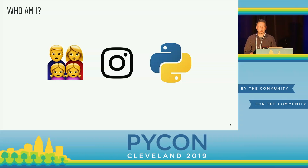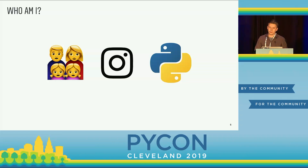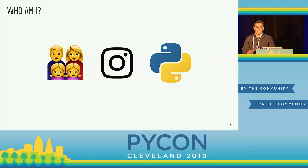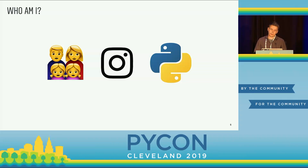I've worked mostly on Python-related projects. Initially I worked on bootstrapping types into our code base — we have about two million lines of Python code that were initially untyped. So we built this open-source project called MonkeyType that collects types at runtime, and you can use those to generate static type annotations. And then for about the past year I've been focused on Python performance work — specifically, how do we make Python go faster for Instagram?